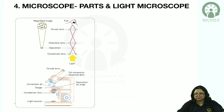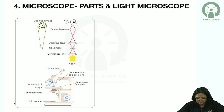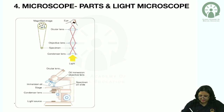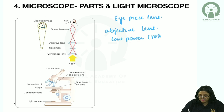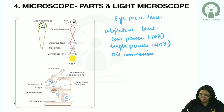Regarding the microscope and its parts: first is the ocular lens (eyepiece lens). Then the objective lens, which is of four types: low power (10x), high power (40x), oil immersion (100x) — these three are mainly used in microbiology — and scanning. The eyepiece may be 5x or 10x magnification.